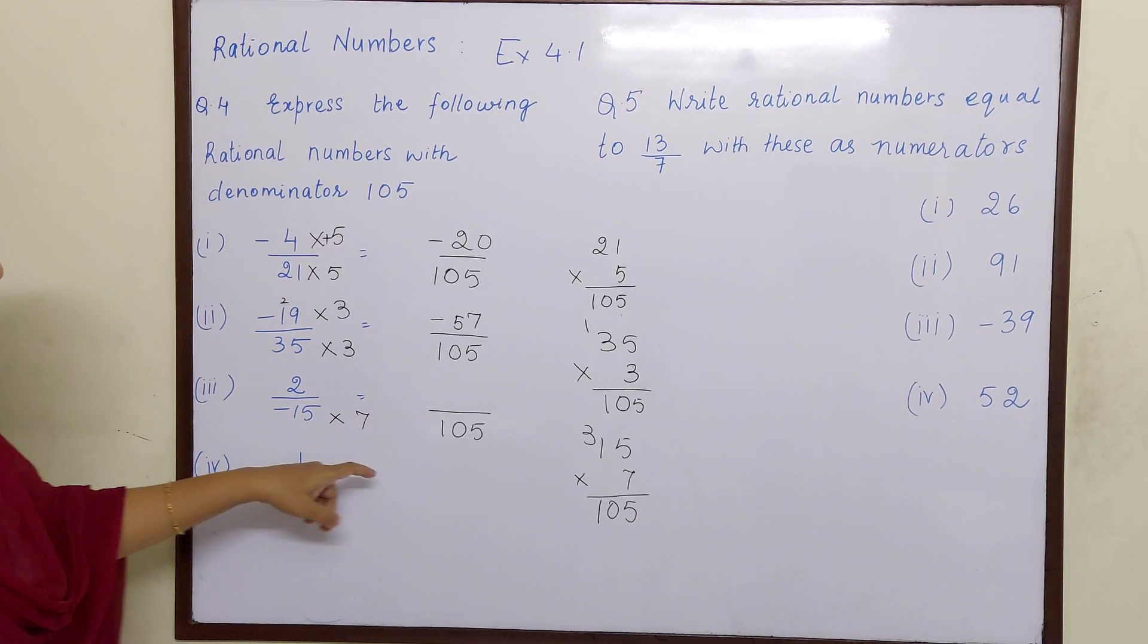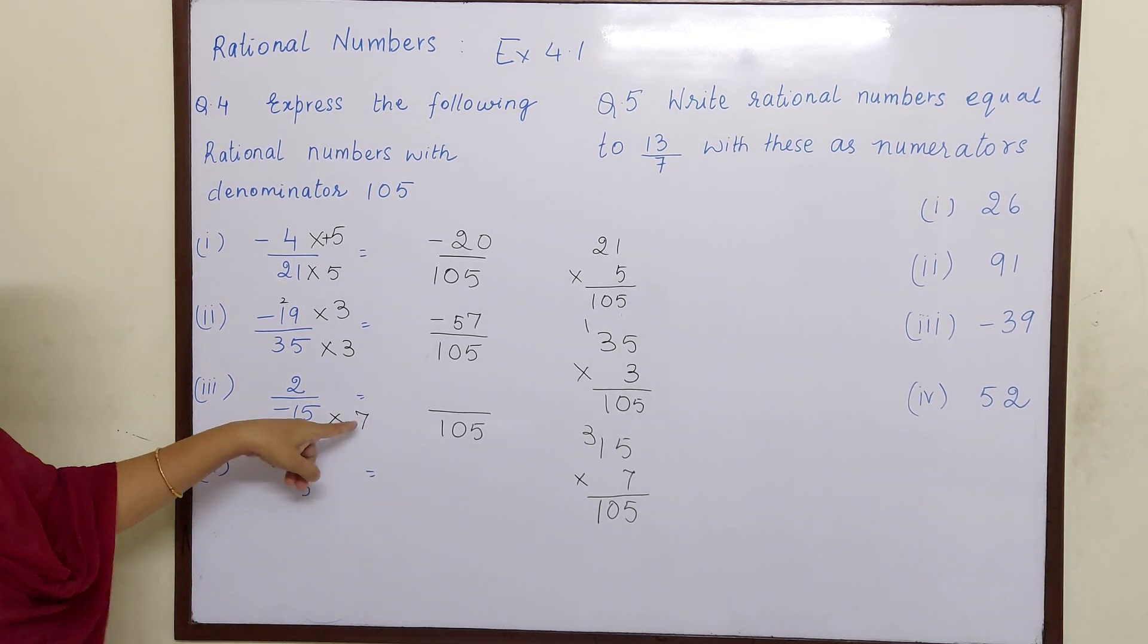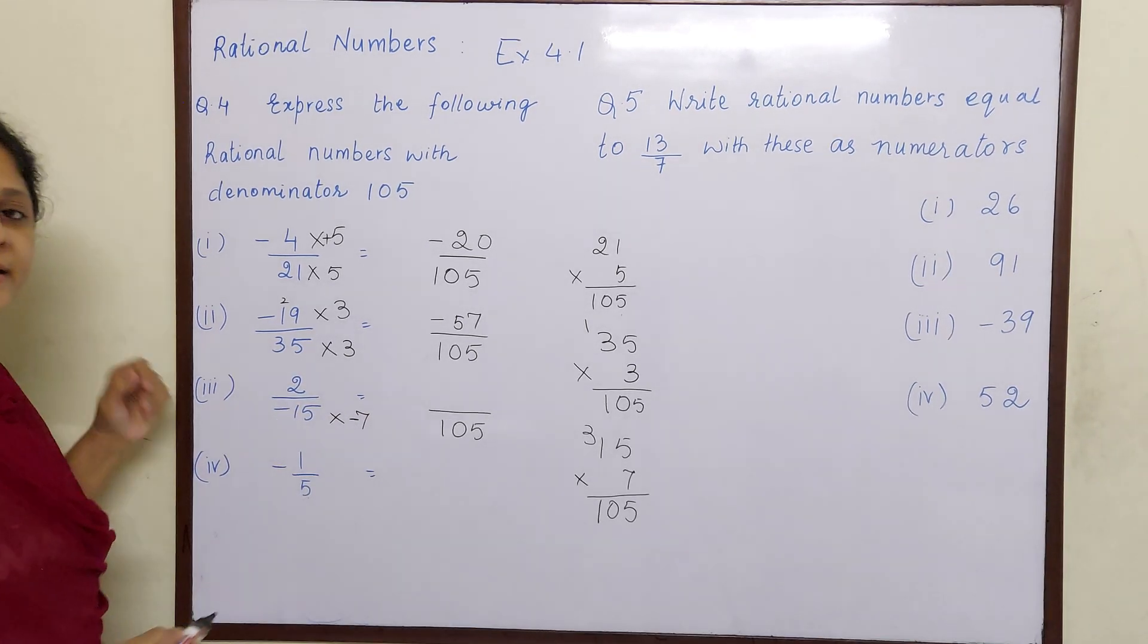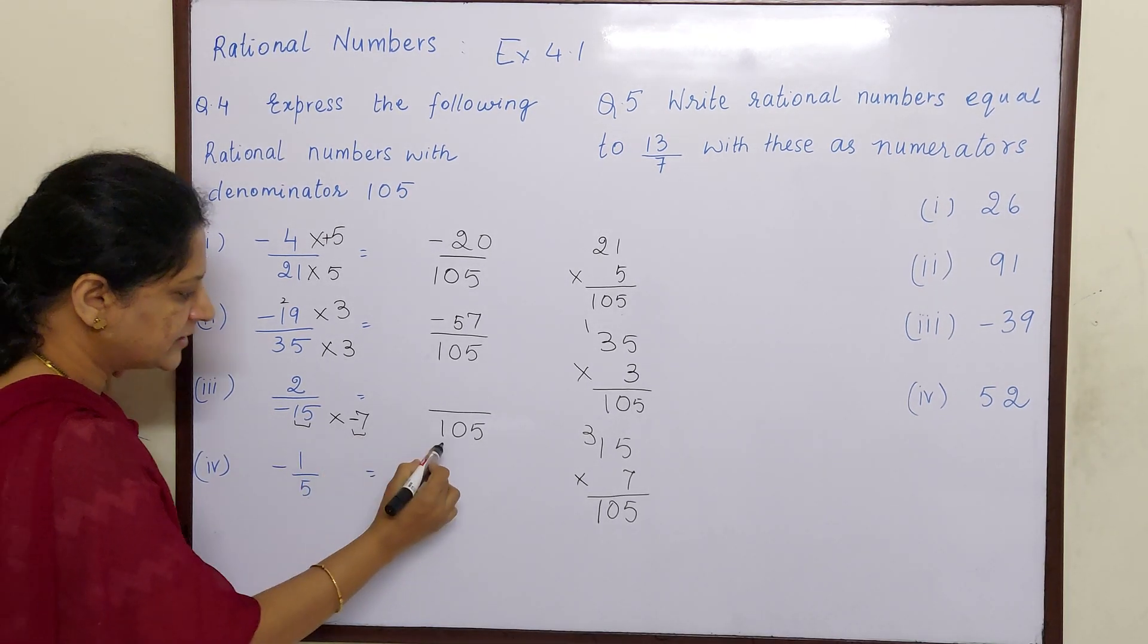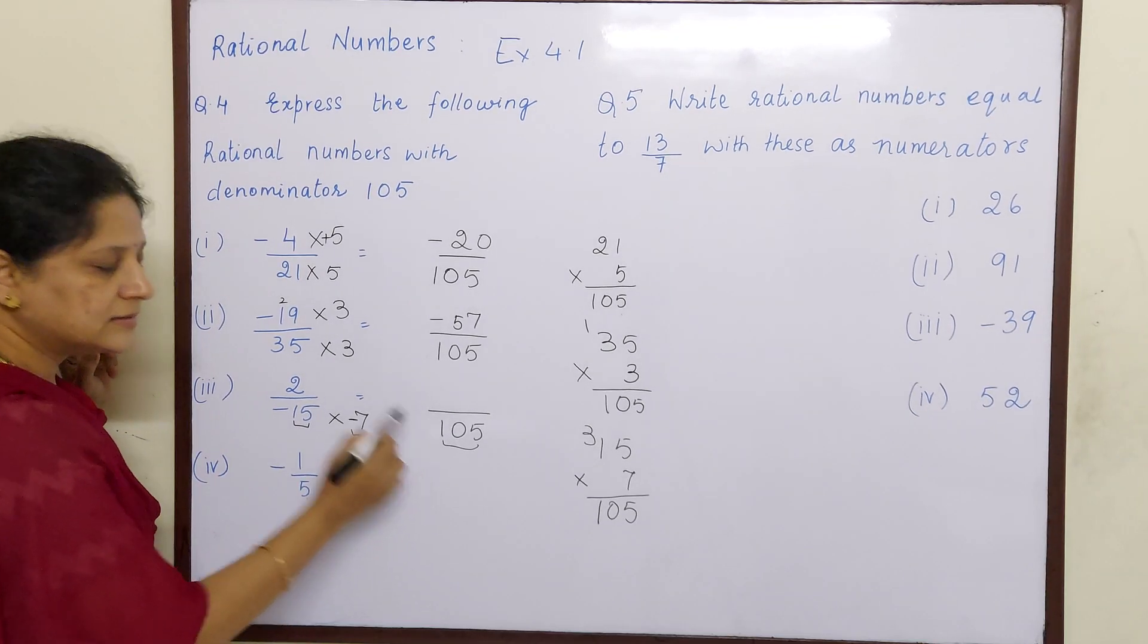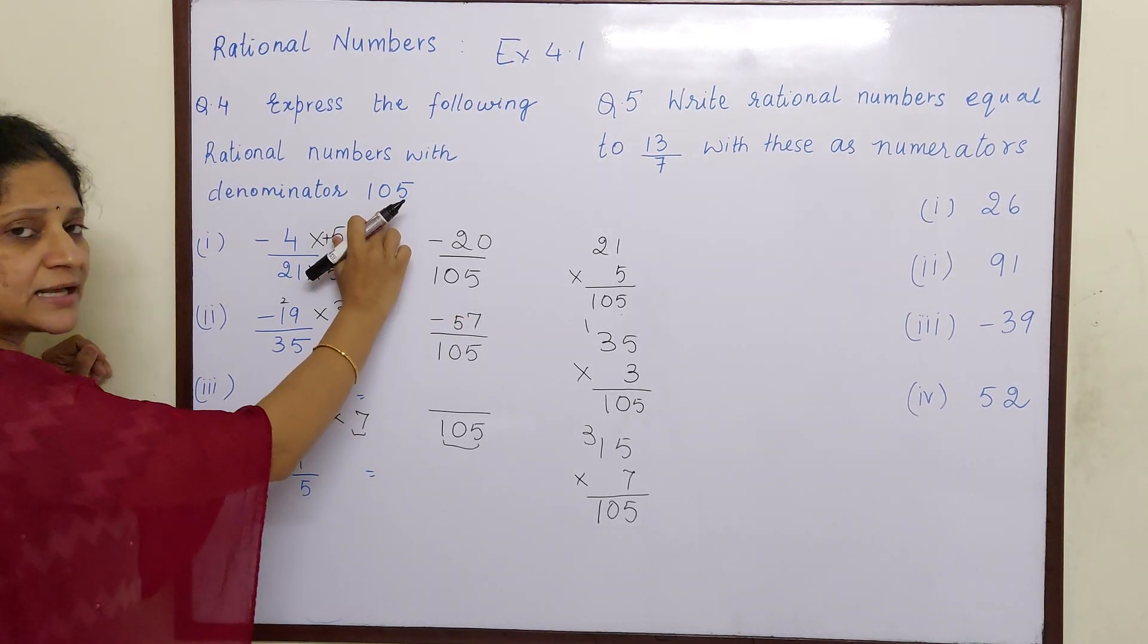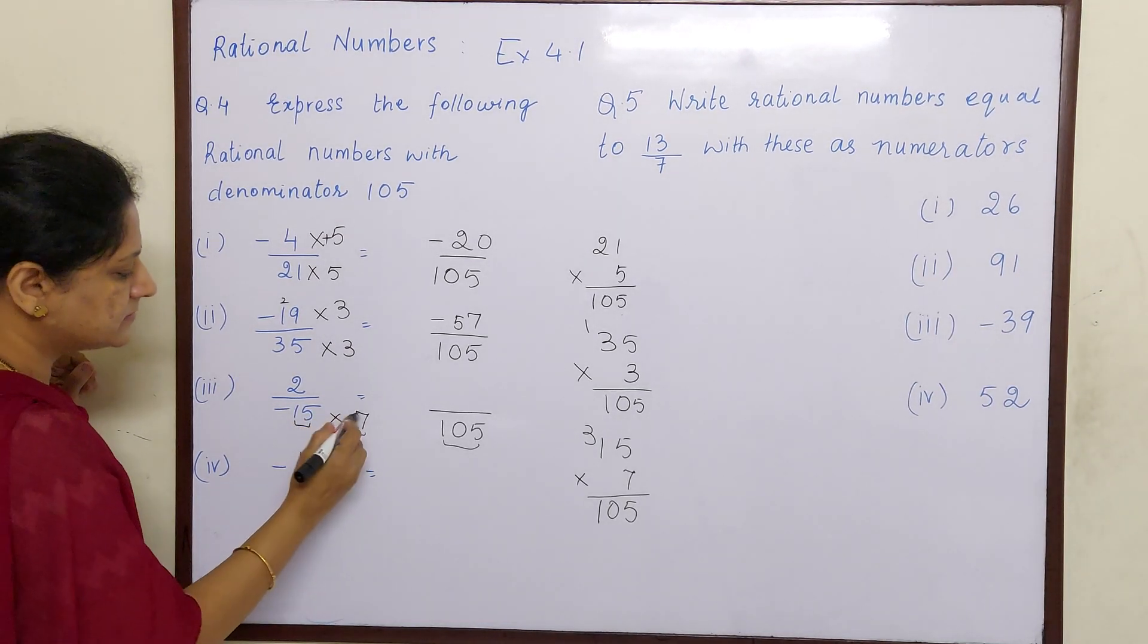But children if you see here, this is minus and here it is plus. So how can it be only 7? Because minus into plus is minus. So that means you have to multiply it with minus 7. Then only 15 into 7 you will get 105 and minus into minus, this sign will be plus. If you don't put minus sign, then it is like minus 105. But they have not asked as minus 105, only 105. So minus into minus is plus.